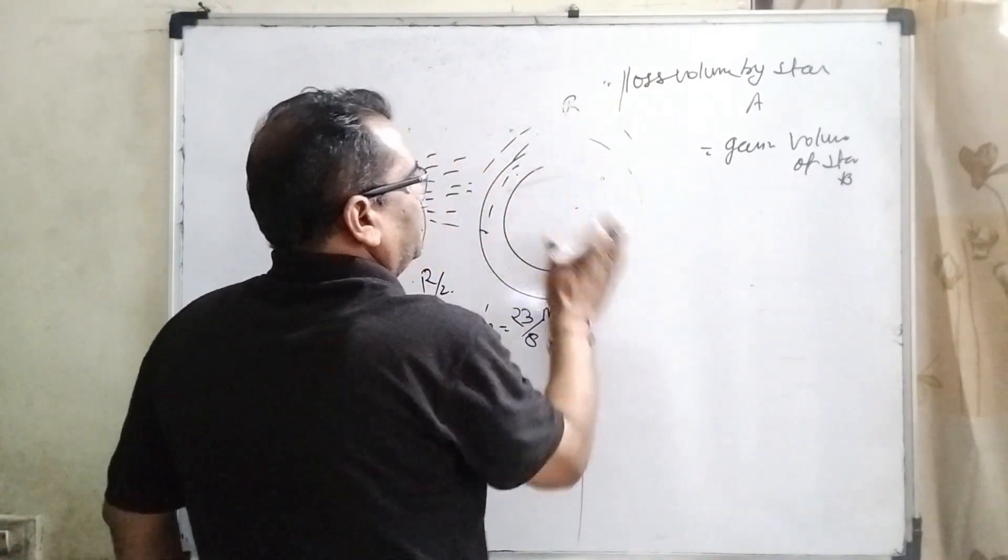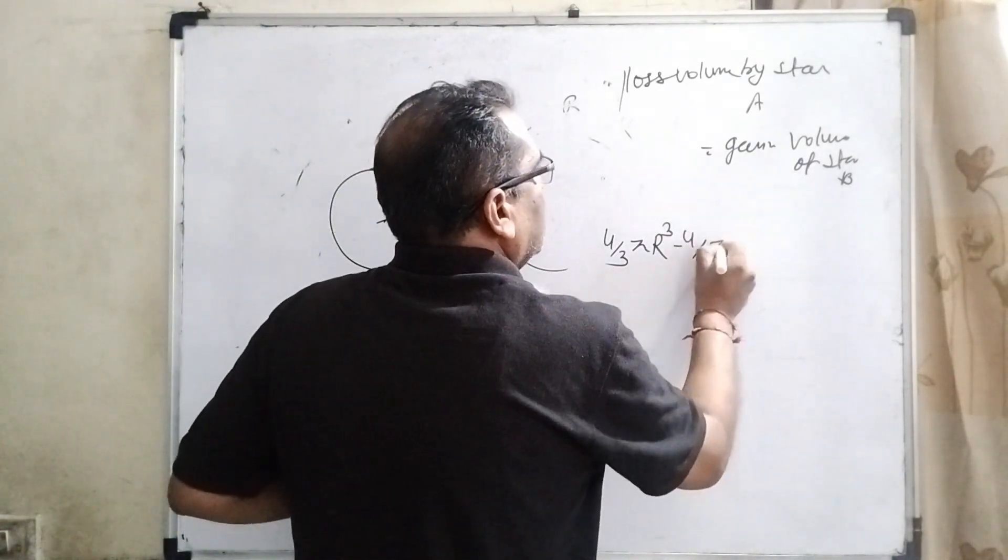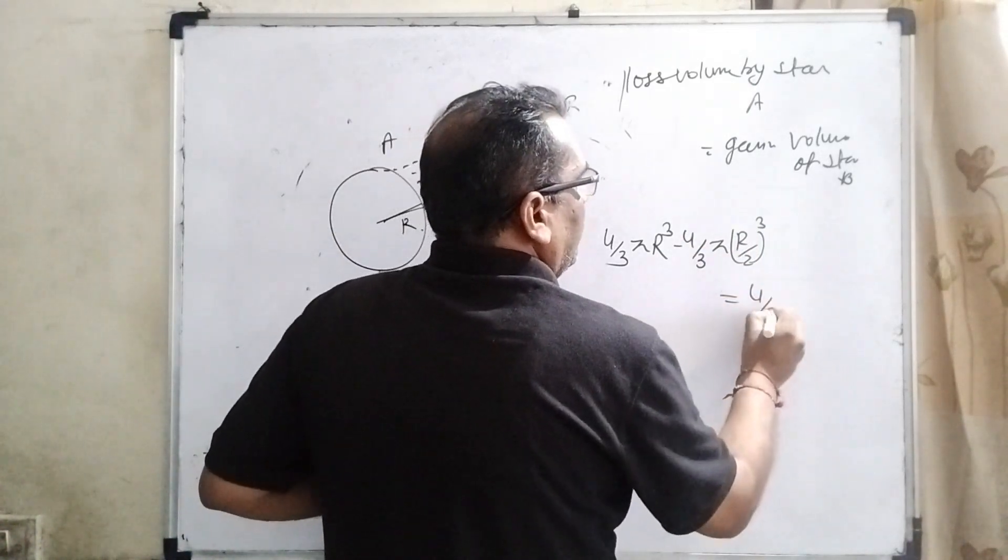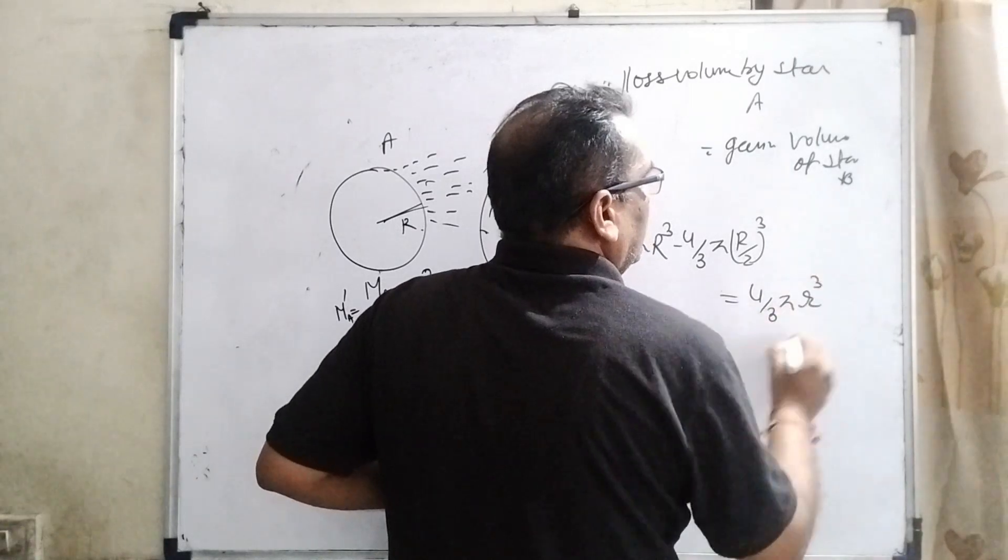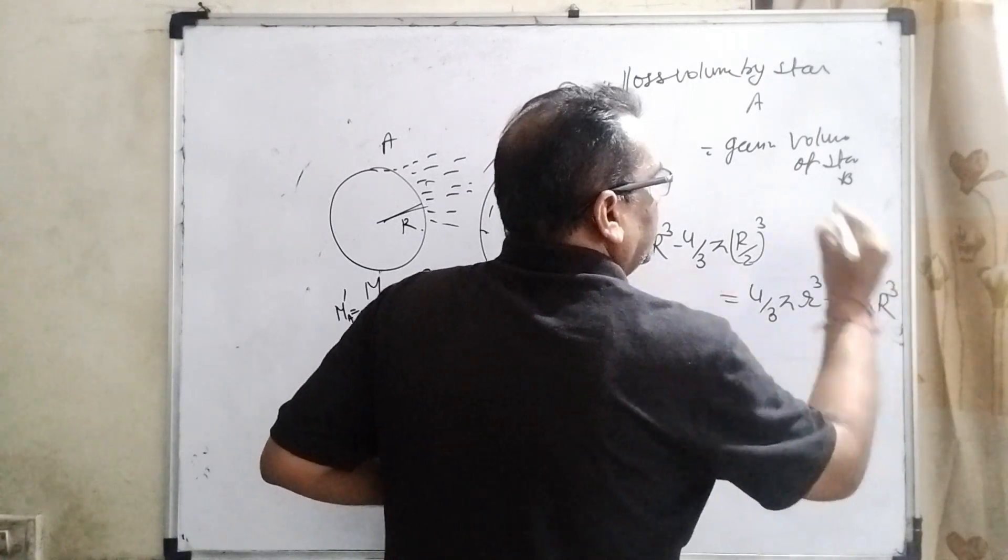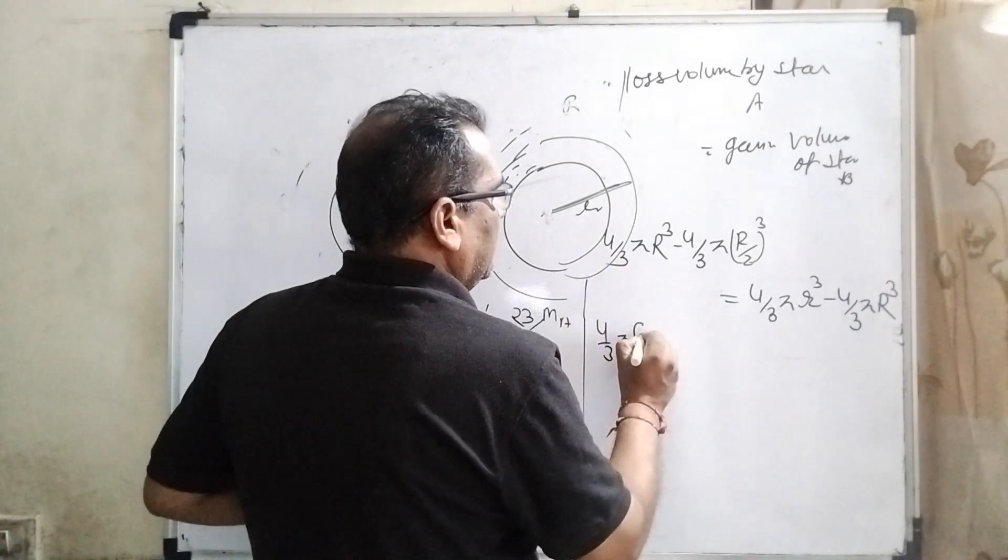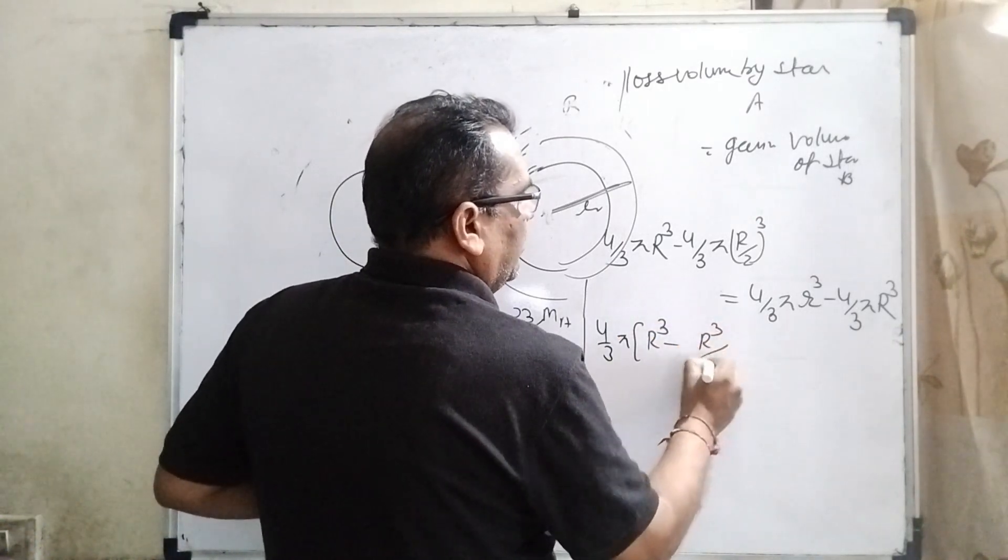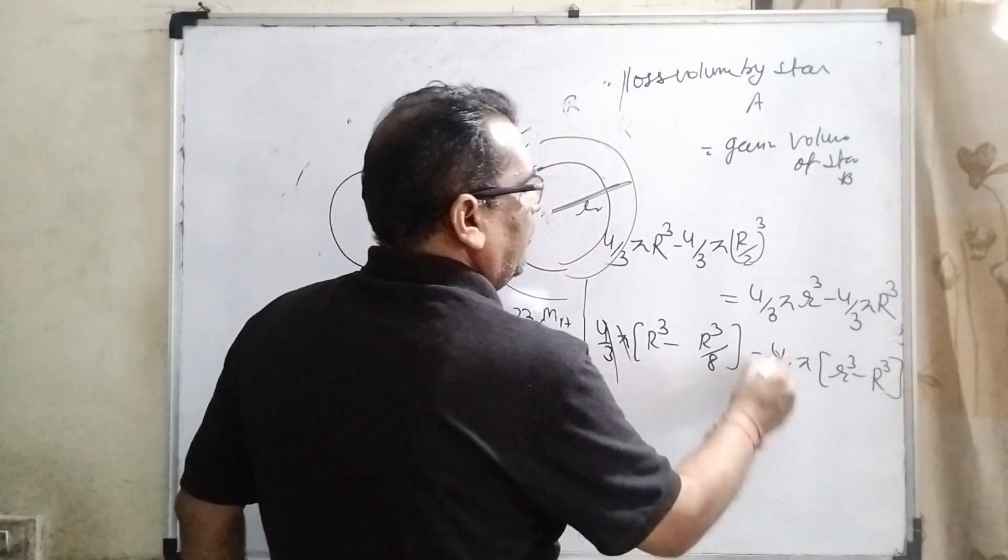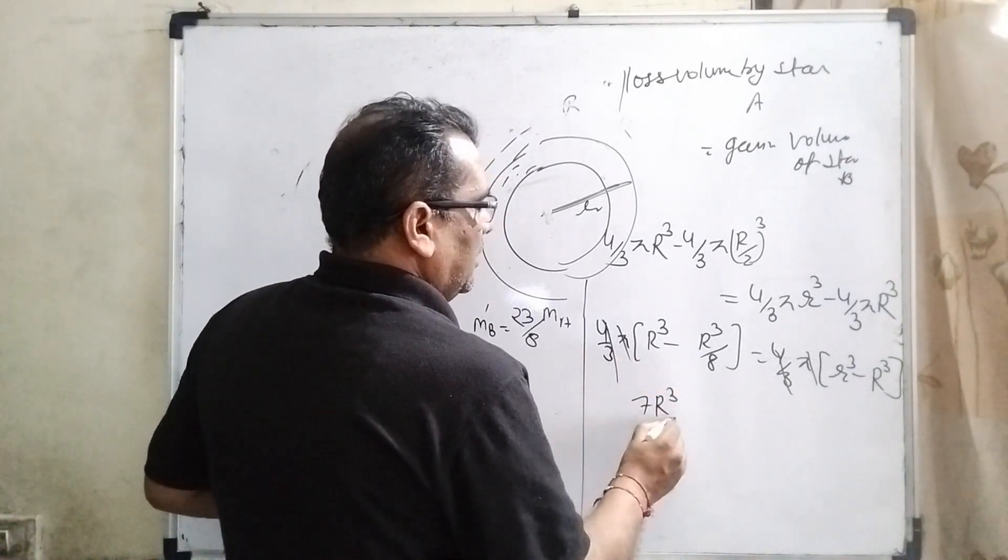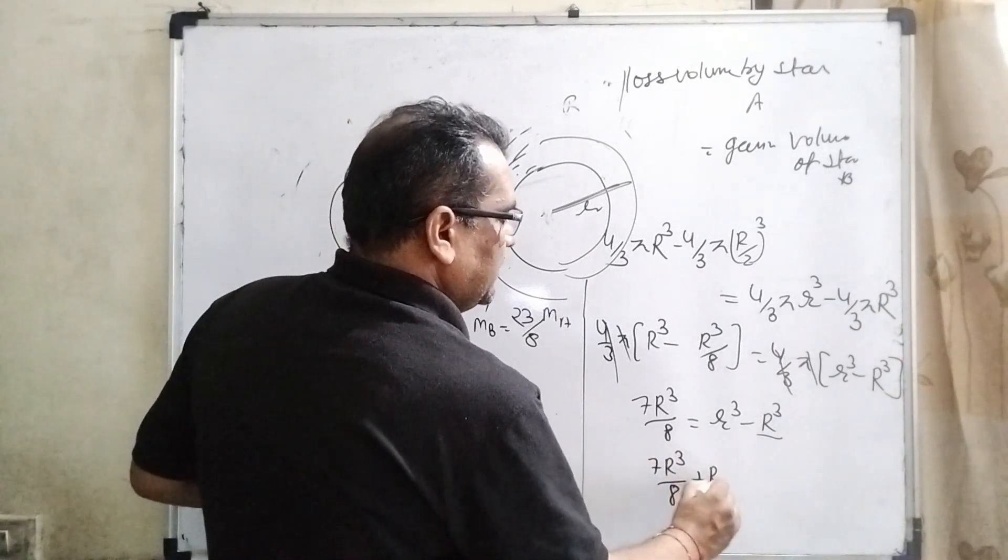You can see 4/3 π R³ is the initial volume of star A. After losing, its radius becomes R/2 cubed. After this material is deposited, radius can be considered capital RB. Then this is RB³ and 4/3 π R³. Here you can see 4/3 π gets common. R³ minus R³/8 equals 4/3 π times RB³ minus R³.